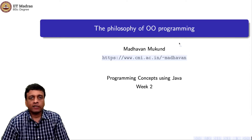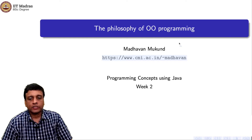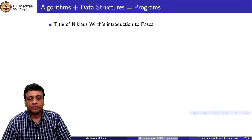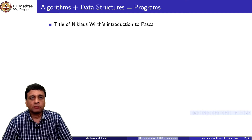Before we go into more details about Java, let us try to understand why object-oriented programming is of interest to us. There is a very famous book by Nicholas Wirth, the inventor of the language Pascal, called 'Algorithms Plus Data Structures Equals Programs'. Most people would agree that programming involves both algorithms and data structures.